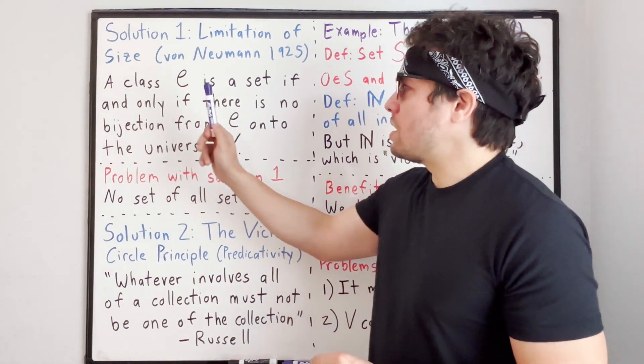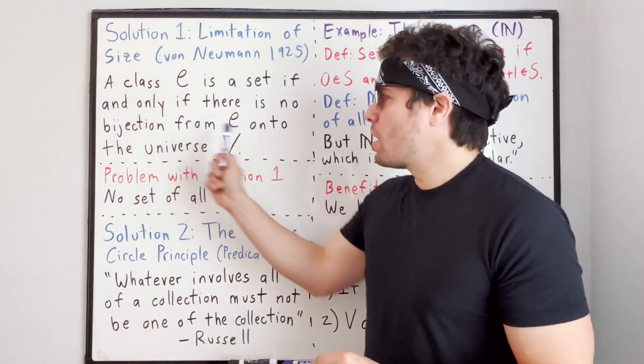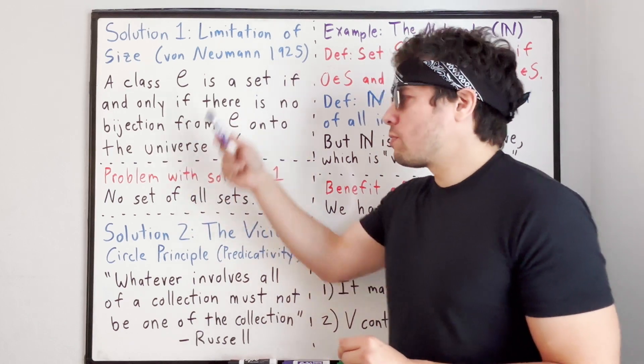attributed to von Neumann 1925. And it says, a class C is a set, if and only if there is no bijection from C onto the universe of all sets V.